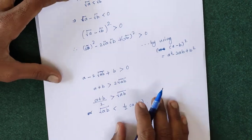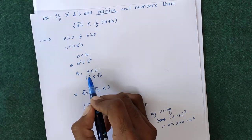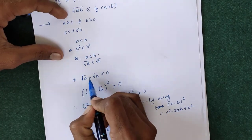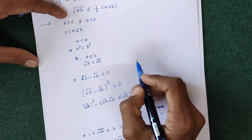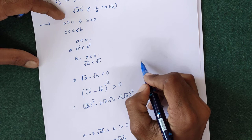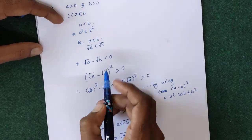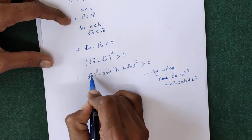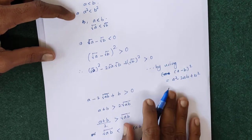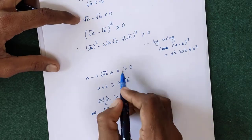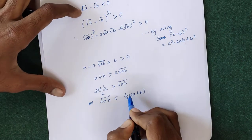Whenever A and B are different numbers, one is less than the other. Taking A < B, we showed √A < √B, so √A − √B is a negative number. Squaring this negative number gives (√A − √B)² > 0. Expanding and rearranging using A − 2√(AB) + B > 0, we get √(AB) < ½(A + B) for A ≠ B.